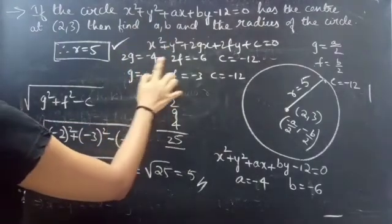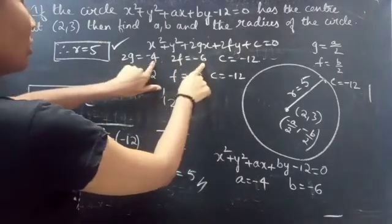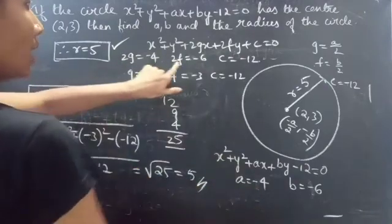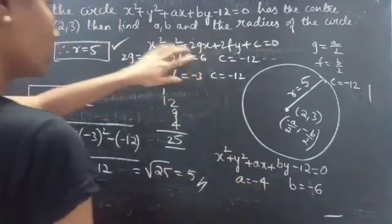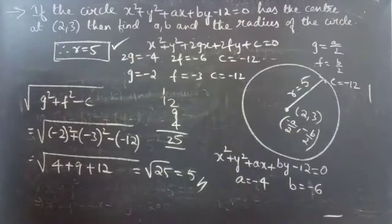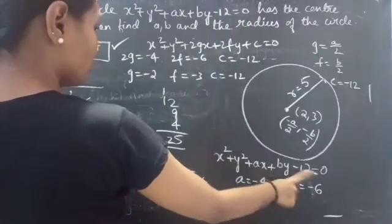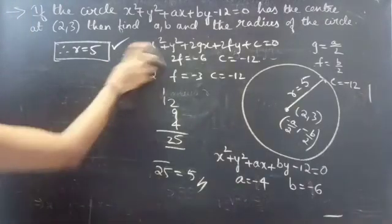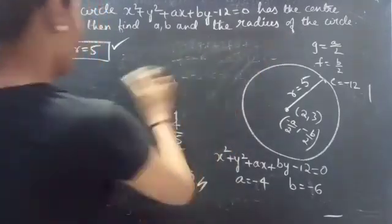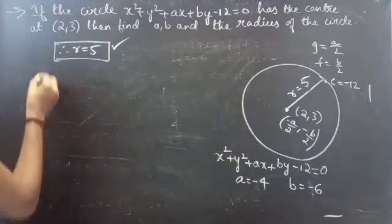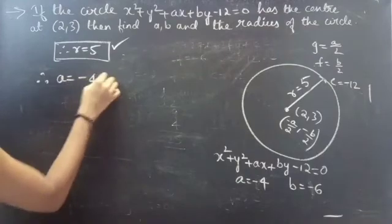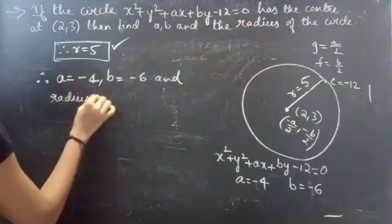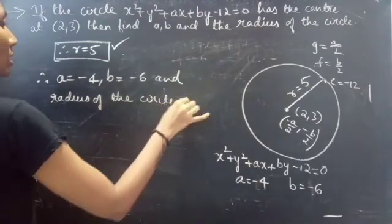Comparing with the given circle, 2g = a gives a = -4, and 2f = b gives b = -6. Also c = -12. We have verified all values thoroughly and can conclude that our a, b, and r values are correct. Therefore a = -4, b = -6, and the radius of the circle is 5.